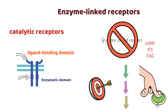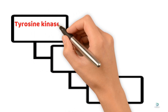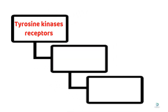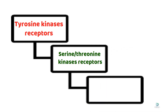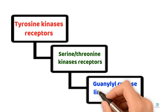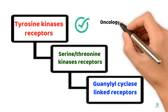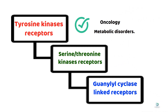There are several types of enzyme-linked receptors, but the most prominent are receptor tyrosine kinases, receptor serine/threonine kinases, and guanylyl cyclase-linked receptors. Among these, receptor tyrosine kinases are the most well-studied and clinically relevant, especially in oncology and metabolic disorders.